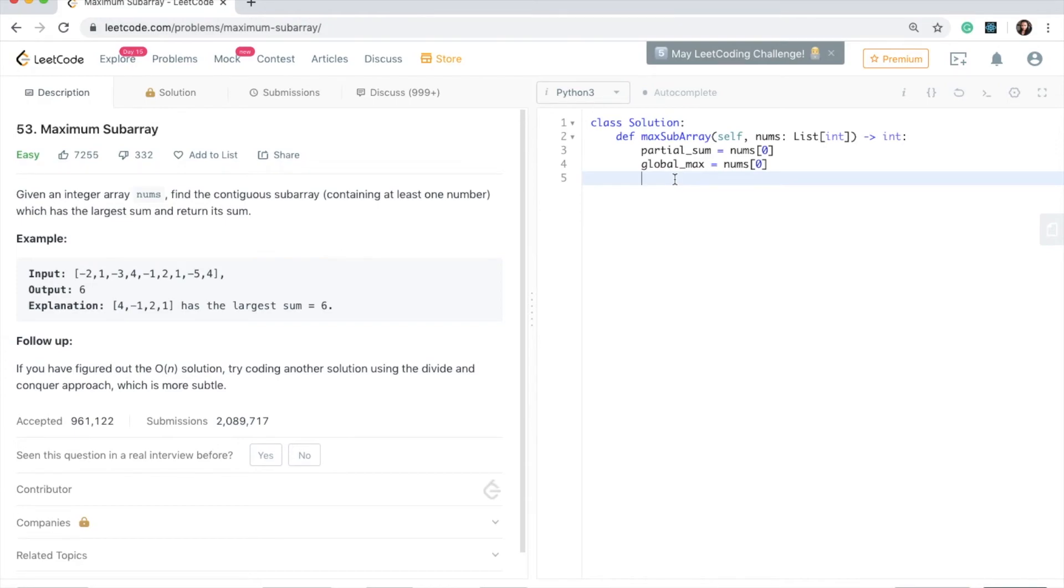Great. So I'm back in the code. And the first thing I've done is initialize the partial sum and the global max as the first element in the array, because there are no elements before that. So the sum of that element is itself. So now what we're going to do is iterate over the nums array. So I'm going to say for i in range and we'll start from the first index because we already took care of the zero index above. So we'll say one and we'll go to the end.